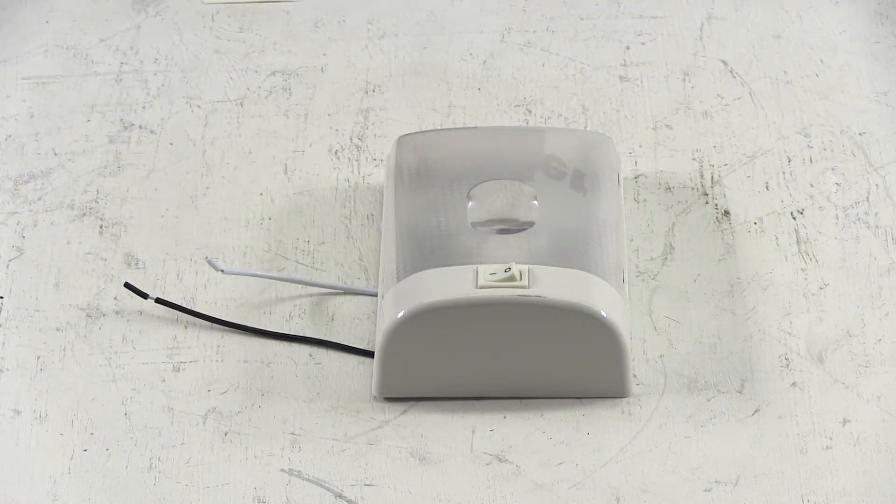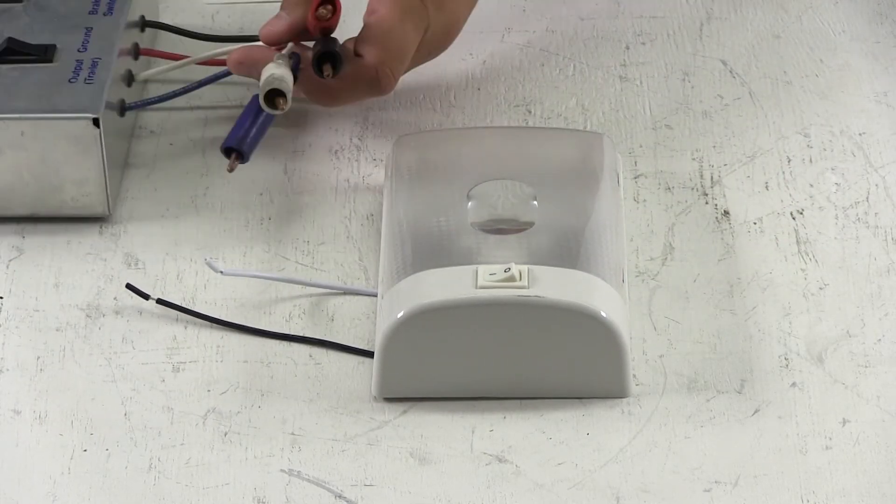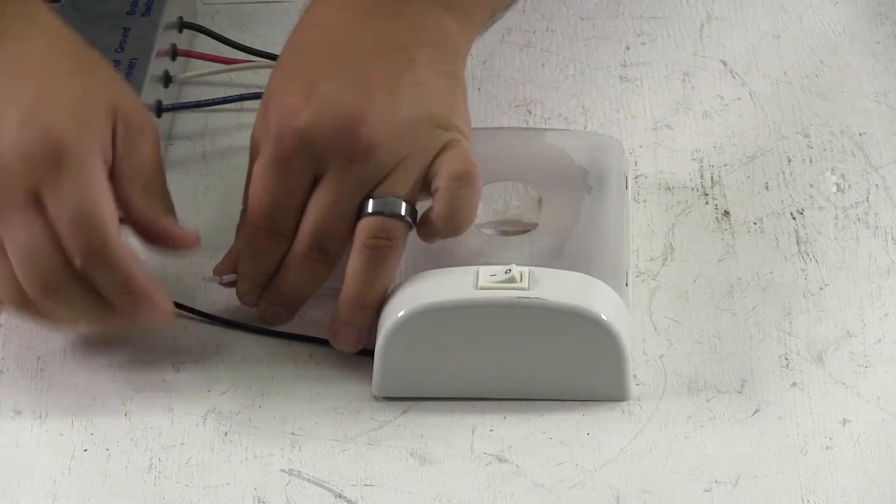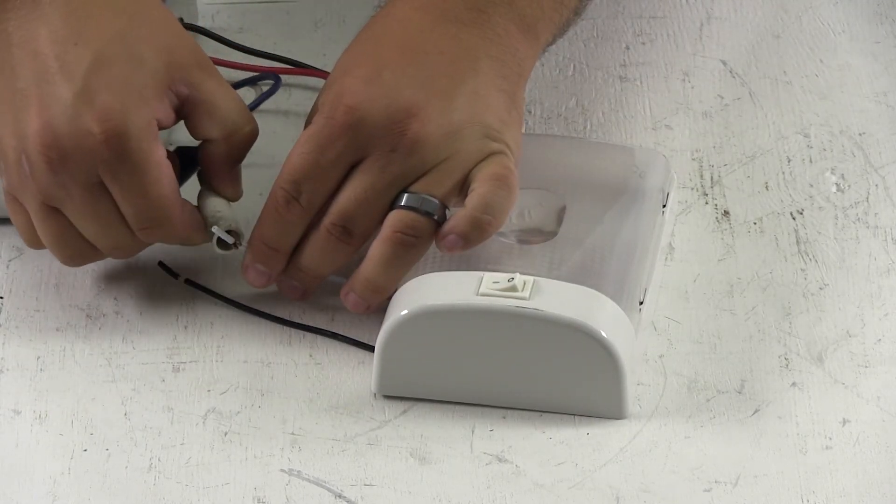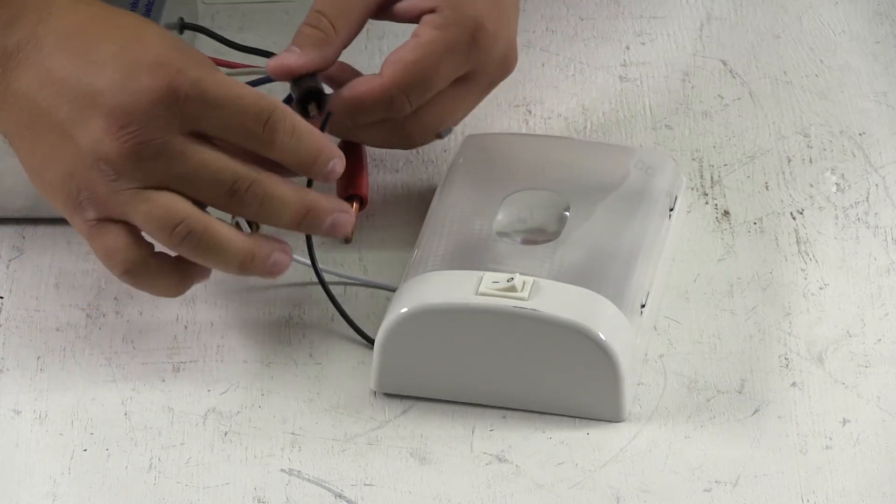Now we're going to hook up a power supply so you can see what it looks like when lit up. We'll connect our white wire to ground and our black wire to power.